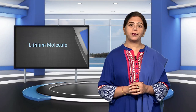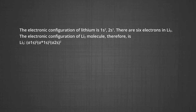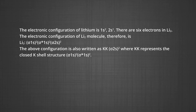The third example is the lithium molecule. The electronic configuration of lithium is 1s², 2s¹. There are 6 electrons in the lithium molecule. The electronic configuration of Li₂ is therefore σ1s², σ*1s², σ2s², which is also written as KK σ2s², where KK represents the closed K-shell structure σ1s², σ*1s².